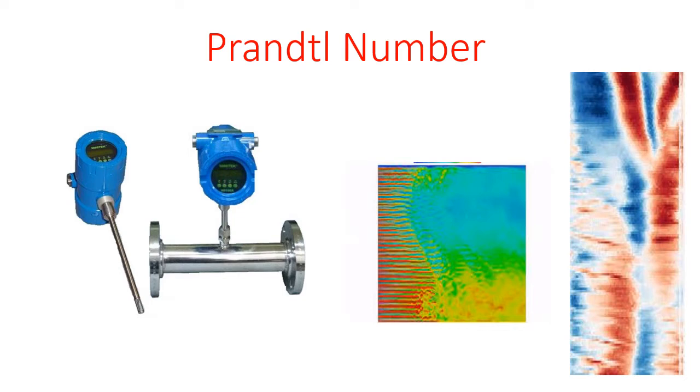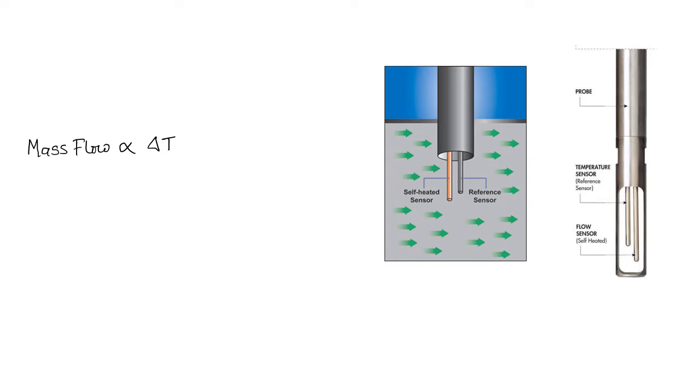In this video, we will not discuss detail about the thermal mass flow meter, but for sake of discussion, I will explain the basic principle in a nutshell. In thermal mass flow meter, there are two sensors basically. One is self-heated sensor and another is reference sensor. As the flow goes through the pipeline, the mass flow is basically proportional to the difference of temperature between the self-heated sensor and the reference sensor.